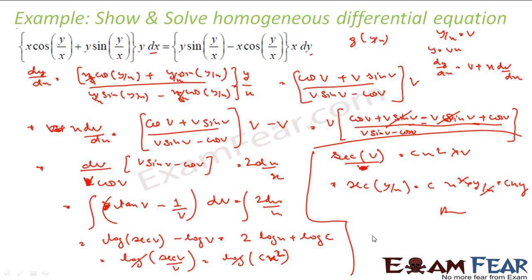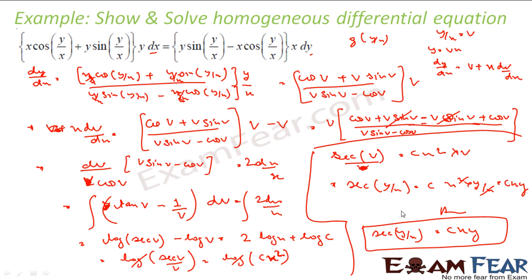So now I will replace v with y/x. Replacing v, I get sec(y/x) = c·x² · (y/x). Cancelling x, this becomes c·xy. And that is my answer: sec(y/x) = c·xy.